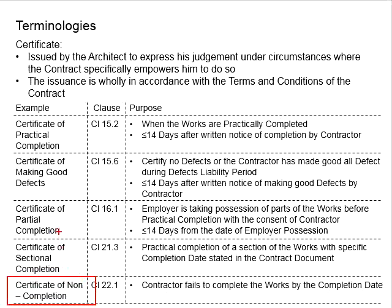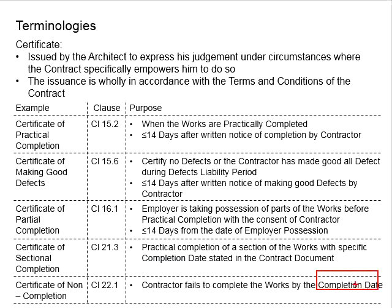Next is the certificate of non-completion, found in Clause 22.1. It is issued when the contractor fails to complete the work by the completion date. In the contract, the completion dates are specified, and the contractor needs to complete and hand over the work to the employer by that date. Exceeding the completion date means the contractor fails to fulfill his obligations in delivering the work within the stipulated time. As a result, the certificate of non-completion will be issued. Normally, the contractor does not like this to happen as this can incur a penalty, which is also stated within the contract document.